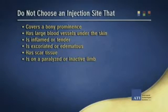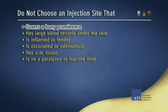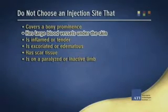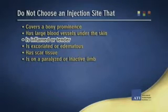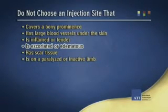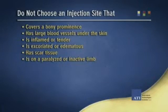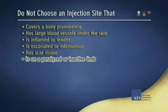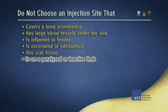Most injection sites are safe unless they cover a bony prominence, have large blood vessels, or are inflamed, excoriated, tender, or edematous. Subcutaneous injection sites should also be free of scar tissue and should not be on a limb that is paralyzed or inactive due to neurological impairment or joint disease.